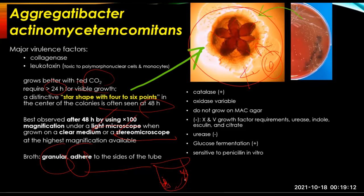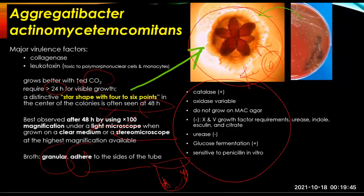Isolates of A. actinomycetemcomitans are catalase positive, oxidase variable, and do not grow on MAC agar. They are negative for X and V factor requirements, urease, indole, esculin, and citrate. It is typically urease negative, which differentiates it from members of the genus Actinobacillus. Glucose fermentation is positive with or without gas. This organism is sensitive to penicillin in vitro.